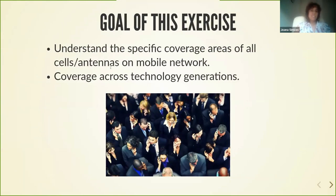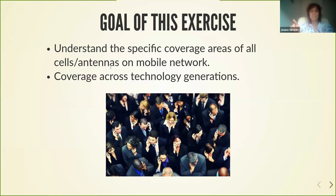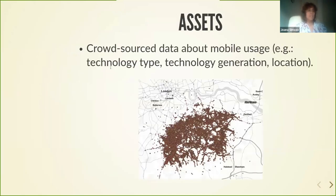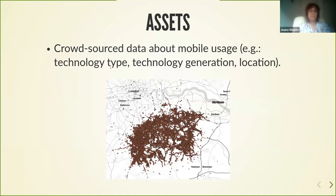The goal of this exercise was to understand the coverage areas of the antennas on the mobile network — specifically, what areas are covered by the different antennas. We were particularly interested in the coverage across technology generation: 2G, 3G, and so on. What we had in our hands was some crowdsourced data, a huge dataset about mobile usage with interesting properties like the technology type, the technology generation.